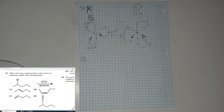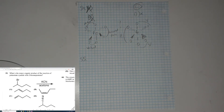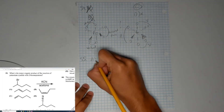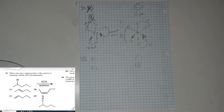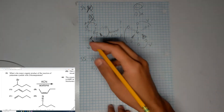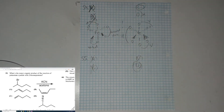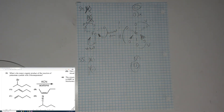Question 55: what is the major organic product of the reaction of potassium cyanide with 2-bromopentane? This tests knowledge of substitution and elimination reactions. CN⁻ is negatively charged and acts as a nucleophile, so it will do a substitution reaction. CN⁻ is a weak base, so it won't abstract a proton to create a double bond via elimination. Therefore D is the correct answer.